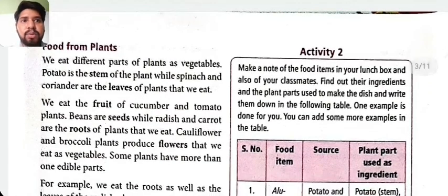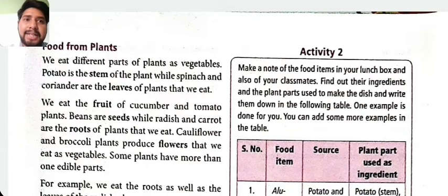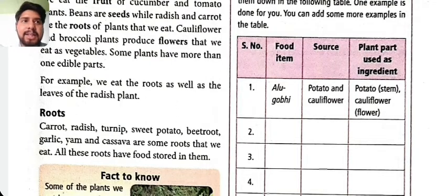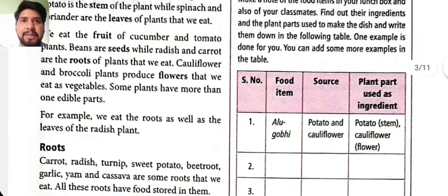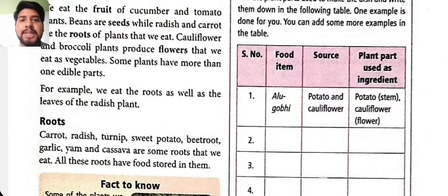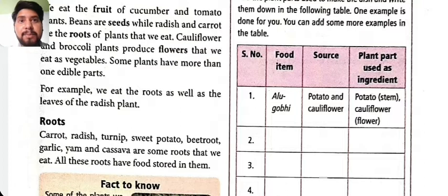Activity: Make a note of food items in your lunch box and your classmates' lunch boxes. Find out their ingredients and the plant part used to make the dish. For example, aloo gobi is made from potato (a stem) and cauliflower (a flower). We eat the fruit of cucumber and tomato; beans are seeds; radish and carrots are roots. Cauliflower and broccoli are flowers that we eat as vegetables.